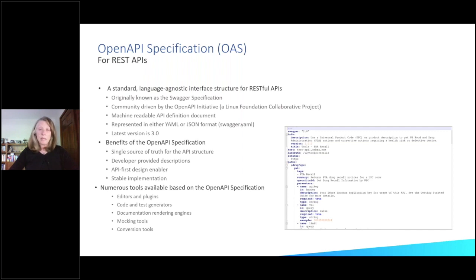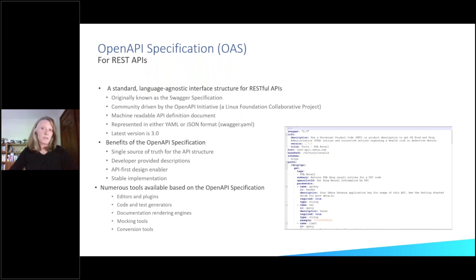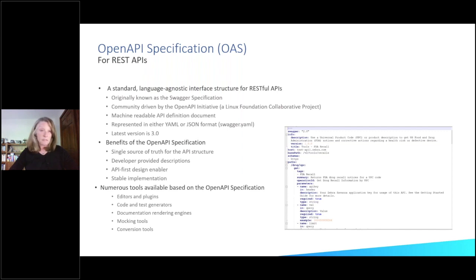You might have heard the word Swagger used in reference to tools because the Swagger spec was taken over by the open API initiative and they changed the name to the open API spec, so as not to confuse it with the tool set that SmartBear offers. The benefits of using the open API spec include that it can be the single source of truth for your API structure — though that's something you have to work out with your organization. It's an API-first design enabler, a stable implementation, and there are numerous tools available, including editors, plugins, code generators, and mocking tools.